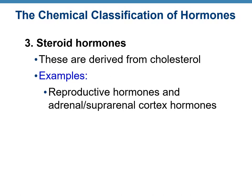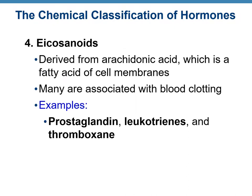The third type of hormones are steroid hormones. All steroids are derived from cholesterol — so not all cholesterol is bad; you do need cholesterol to make steroids. Examples include reproductive hormones such as testosterone and estrogen, as well as hormones from the adrenal cortex. The fourth type are eicosanoids, derived from a special fatty acid of the cell membrane called arachidonic acid. Examples are prostaglandins, leukotrienes, and thromboxane.